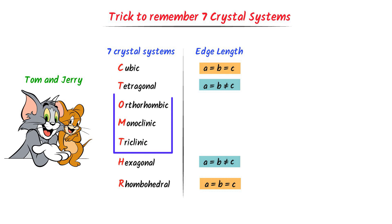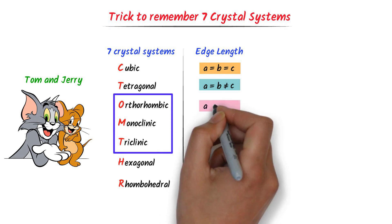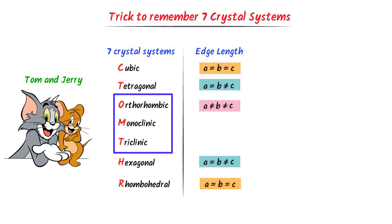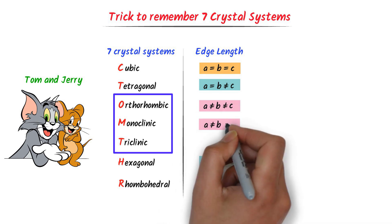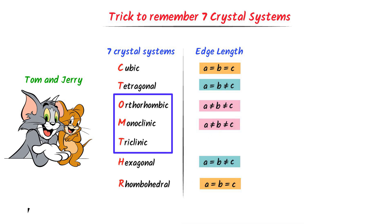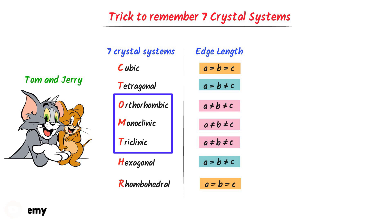The remaining three systems share the same edge length relationship: A is not equal to B, and B is not equal to C. These are the edge lengths of all seven crystal systems.